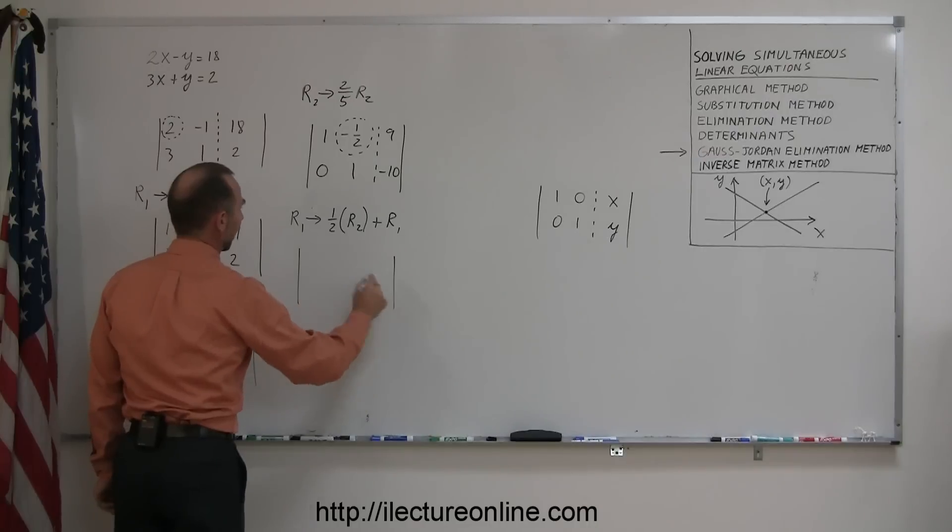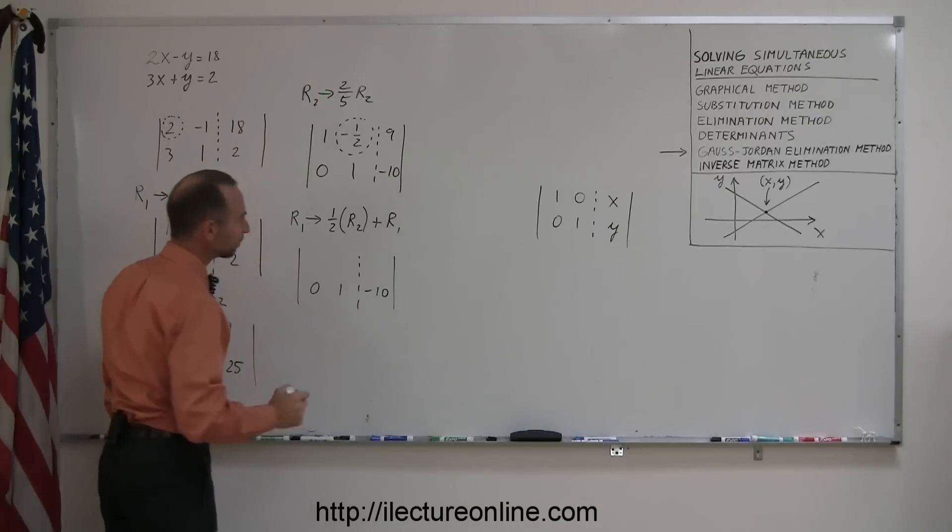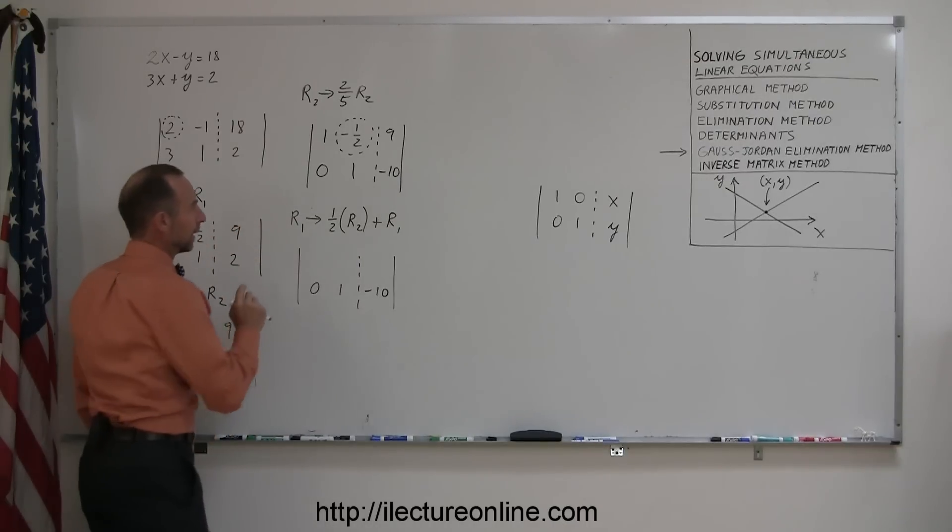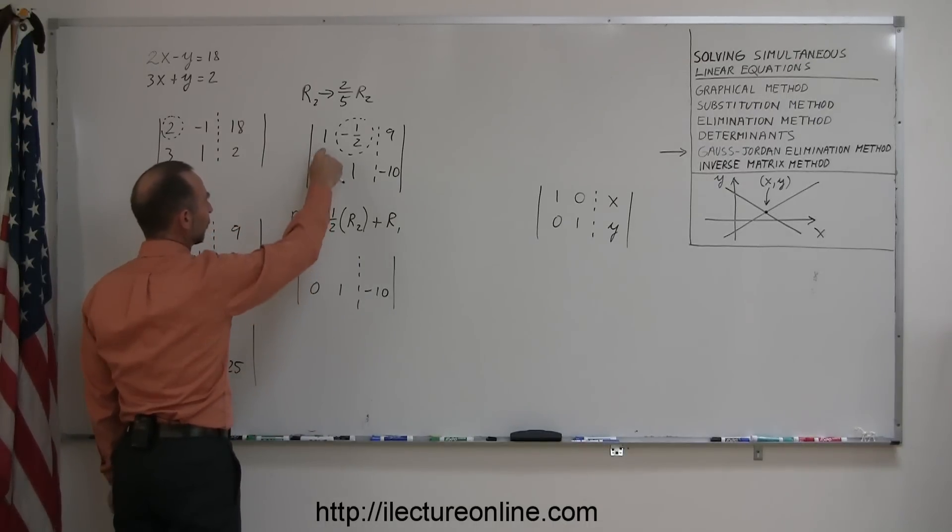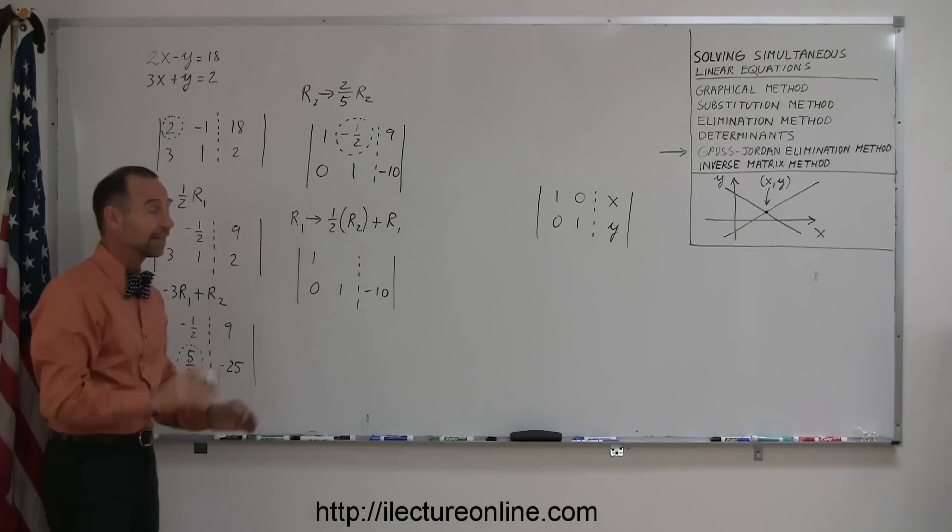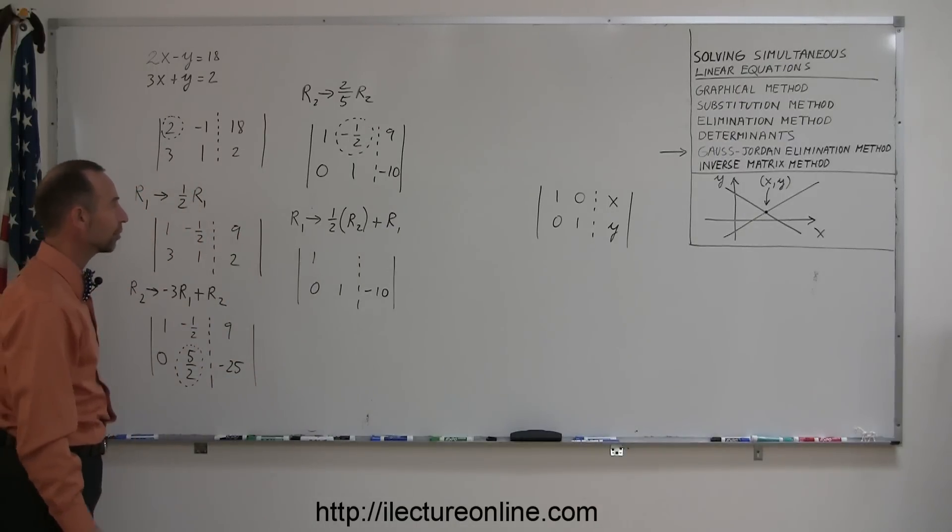So, what happens? I'm not changing the second row at all, so that stays as 0, 1, and minus 10. If I do this to the first one, notice nothing changes. If I take 1 half times row 2, that's 1 half times 0, and add it to the first one, the 1 doesn't change. And that's, the technique is designed to do that, not to change what already accomplished.